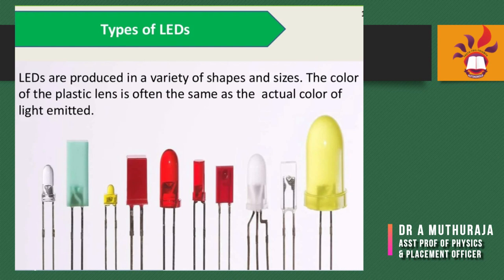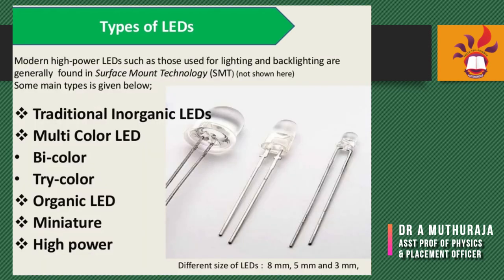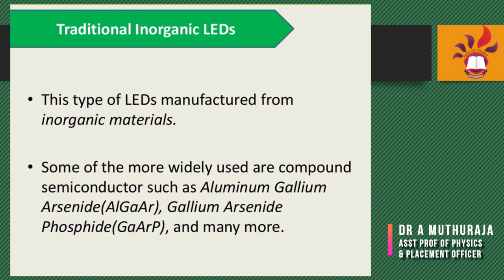Modern high power LEDs, such as those used for lighting and backlighting, are generally found as surface mount technology (SMT). Types of LEDs include traditional inorganic LEDs, multicolor LEDs, bicolor, tricolor, organic LEDs, and miniature LEDs. Traditional inorganic LEDs are manufactured from inorganic materials — some widely used compound semiconductors include aluminum gallium arsenide (AlGaAs), gallium arsenide phosphide (GaAsP), and many more.